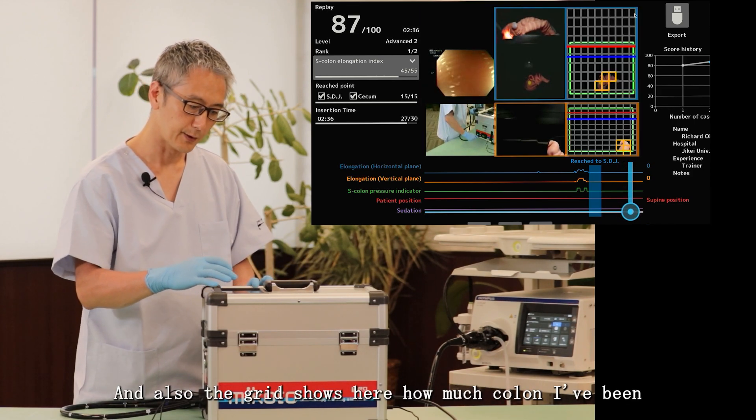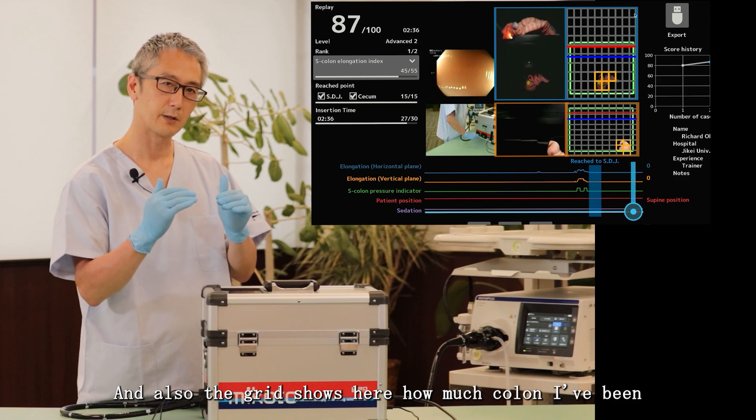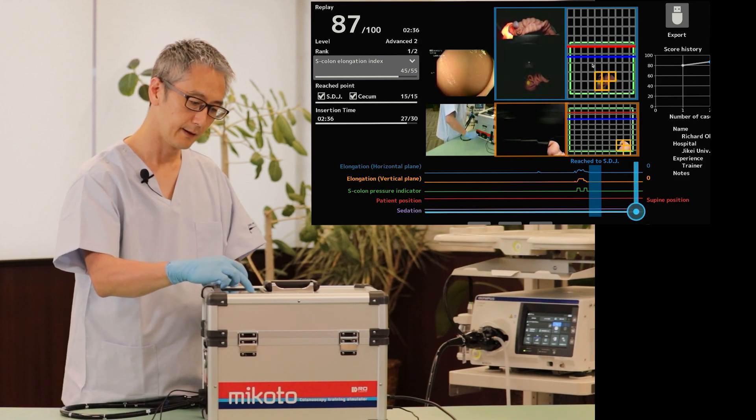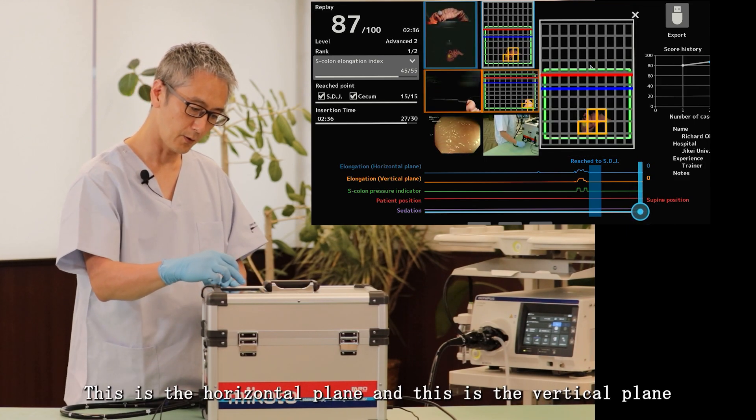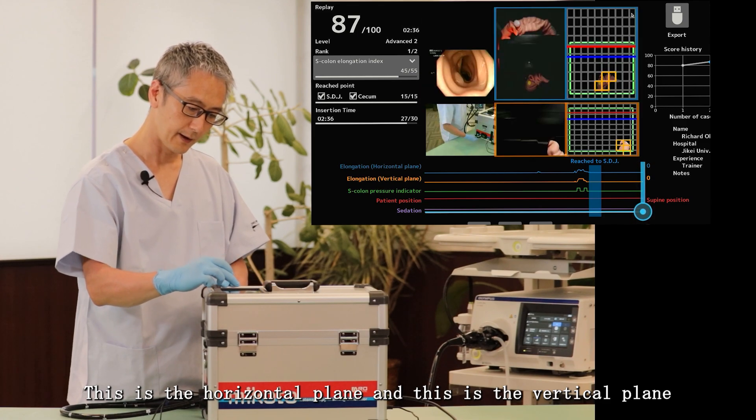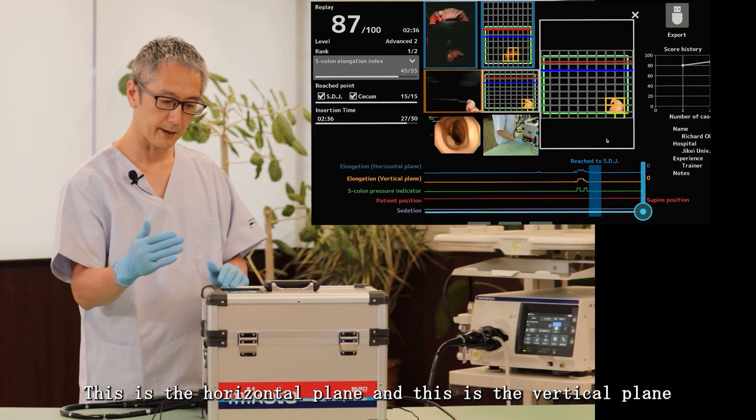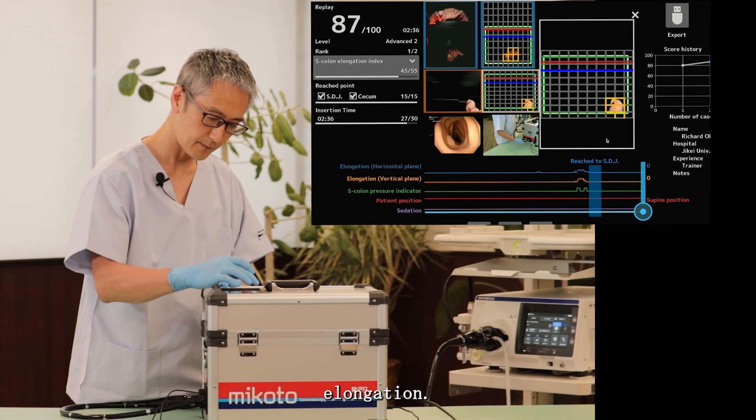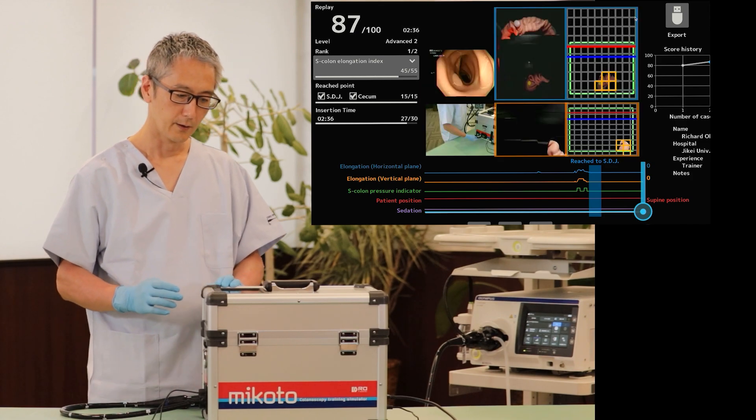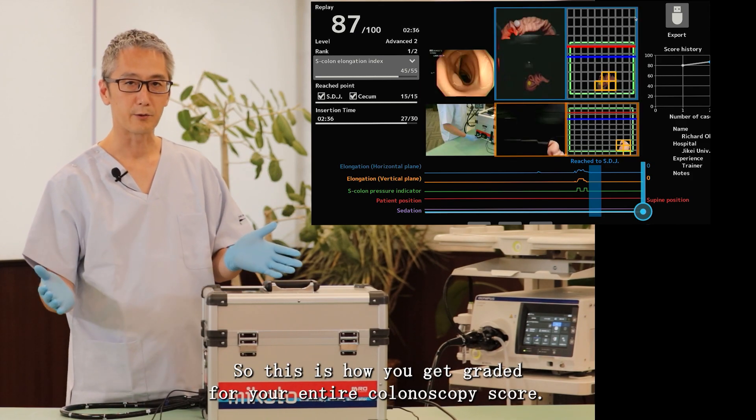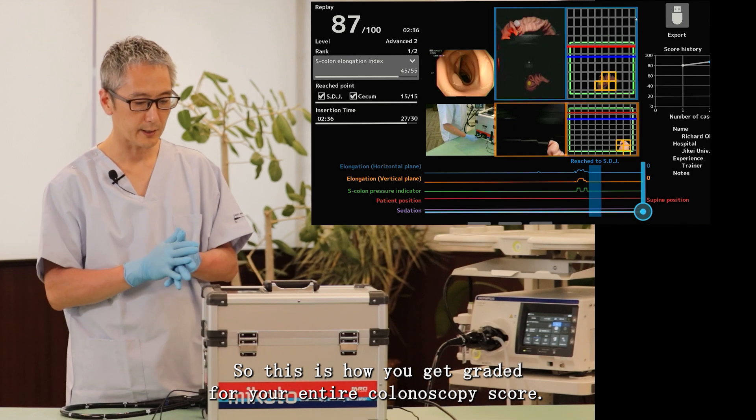And also the grid shows here how much colon I've been stretching out. This is the horizontal plane and this is the vertical plane elongation. So this is how you get graded for your entire colonoscopy score.